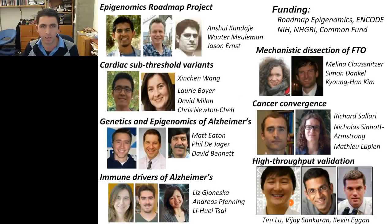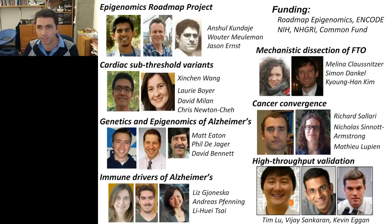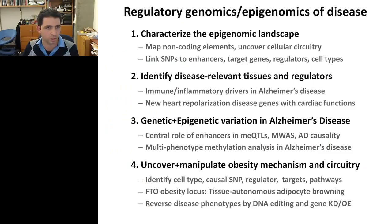This has been an amazing collaboration across many individuals for the Roadmap Genomics Project — co-first authors were Anshul Kundaje, Wouter Meuleman, and Jason Ernst. For cardiac sub-threshold loci: collaboration with Xinchen Wang and Laurie Boyer. For Alzheimer's disease genetics and epigenetics: collaboration with Philip De Jager and David Bennett. For Alzheimer's disease in mouse: collaboration with Li-Huei Tsai's lab. For mechanistic dissection of FTO: work initiated and led by Melina Claussnitzer for several years. I'll stop there and be happy to take any questions.